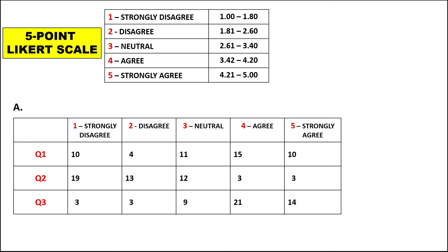For this 5-point Likert scale, the scale is as follows: 1 is strongly disagree, 2 is disagree, 3 is neutral, 4 is agree, and 5 is strongly agree. Then for Table A,